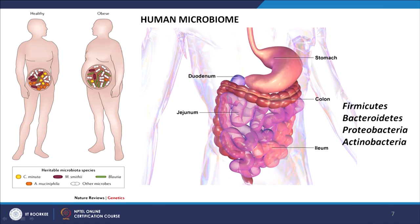For example, we now know that the gut microbial community of a healthy individual is distinct from that of an obese individual. The human digestive system — where most digestion happens — includes the stomach, duodenum, ileum, jejunum, and colon. In the stomach, pH is around 2 and we have less than 10^4 microbes per gram of digestive pulp. In the jejunum, pH is around 4 with 10^3 to 10^4 microbial cells per gram. In the ileum, pH rises to 5 and we have around 10^8 cells per gram.